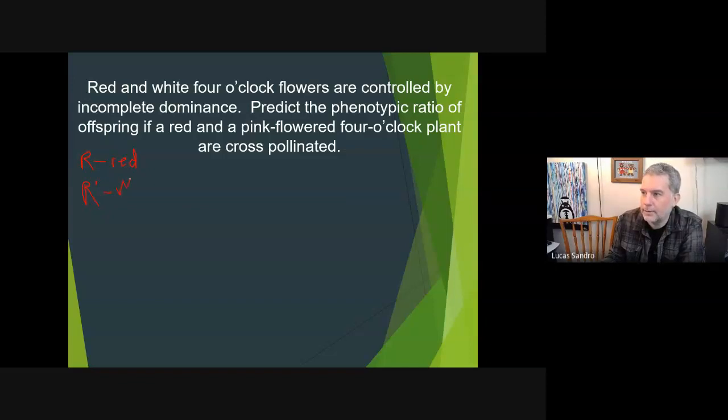Predict the phenotypic ratio of offspring if red and pink flowered four o'clock plants are cross pollinated. Again, we're back to Punnett squares. If a red and a pink flowered four o'clock - that would be big R big R for the red, the pink is going to be big R and big R with the mark.